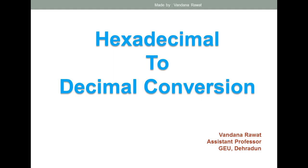Good morning everyone. Now we come to the next topic: how to convert any hexadecimal number into a decimal number. As you all know, the base of the hexadecimal number is 16 and the base of the decimal number is 10.